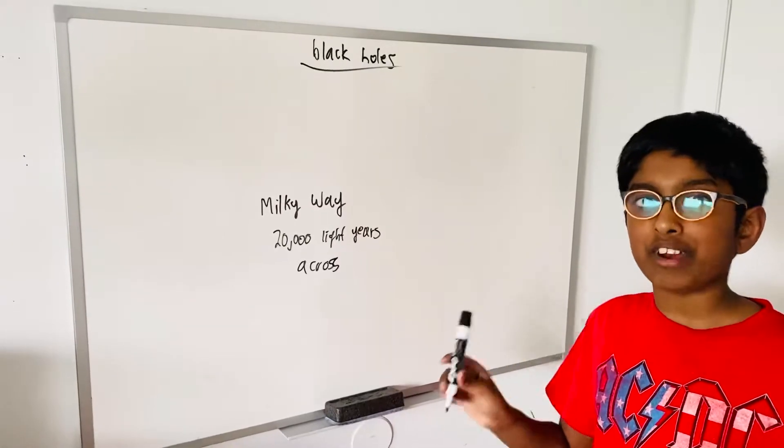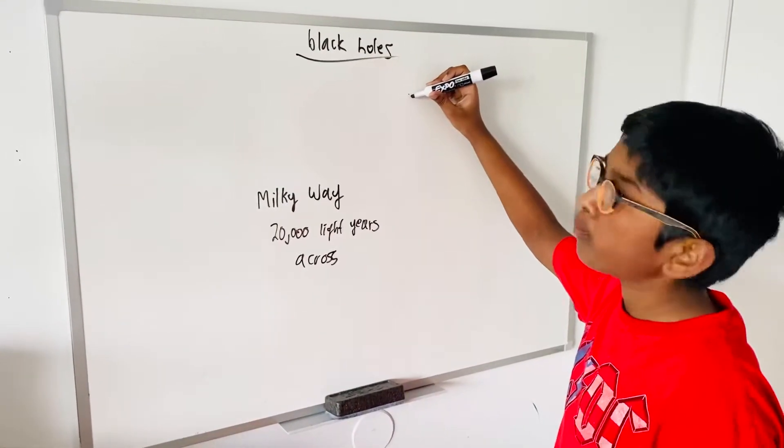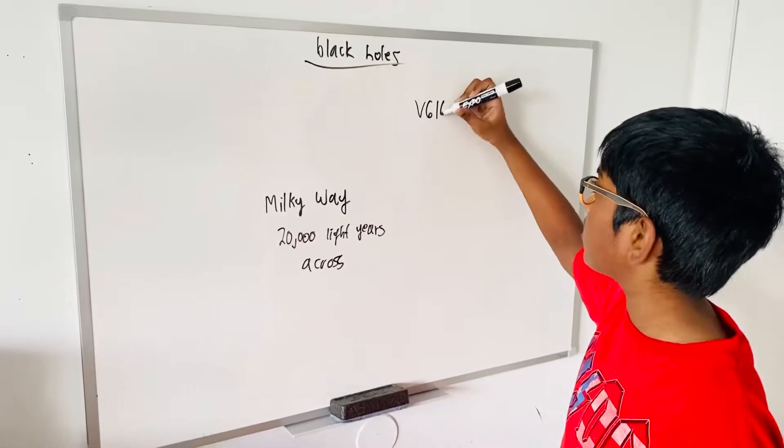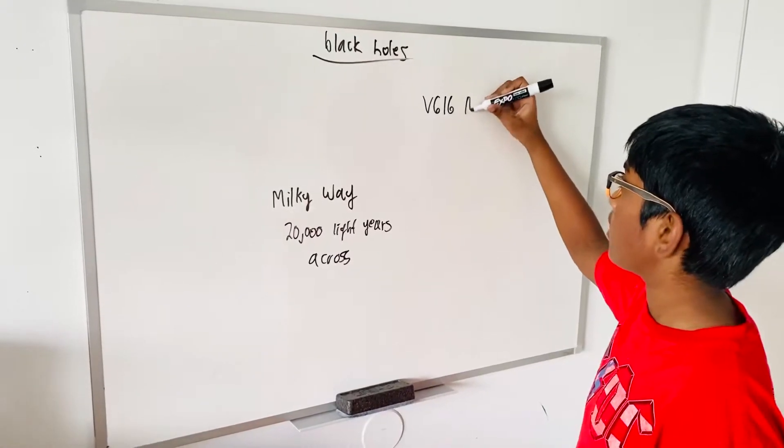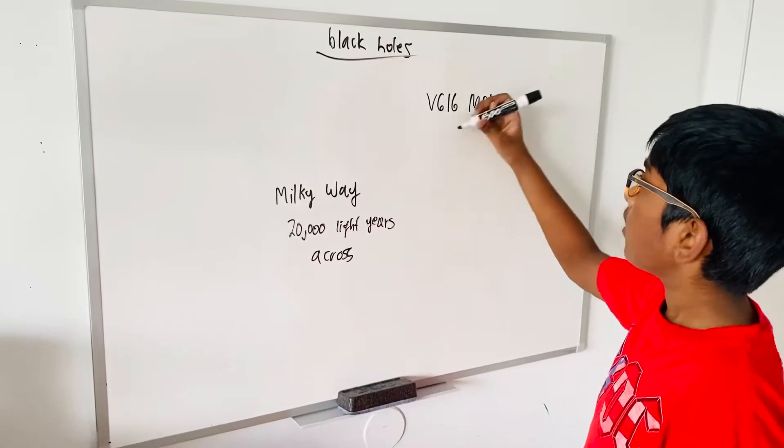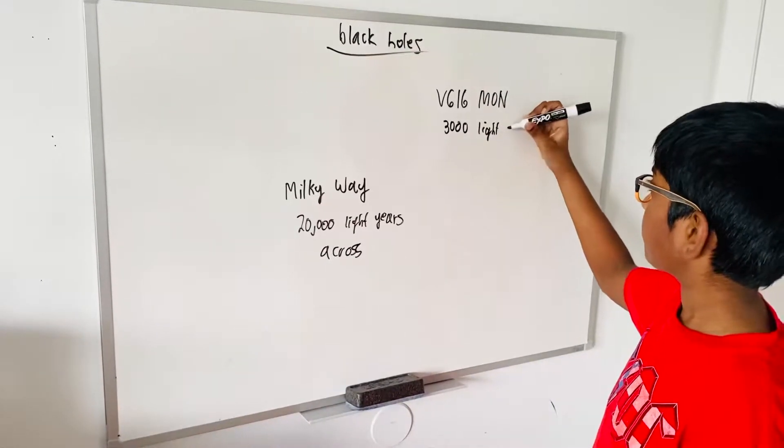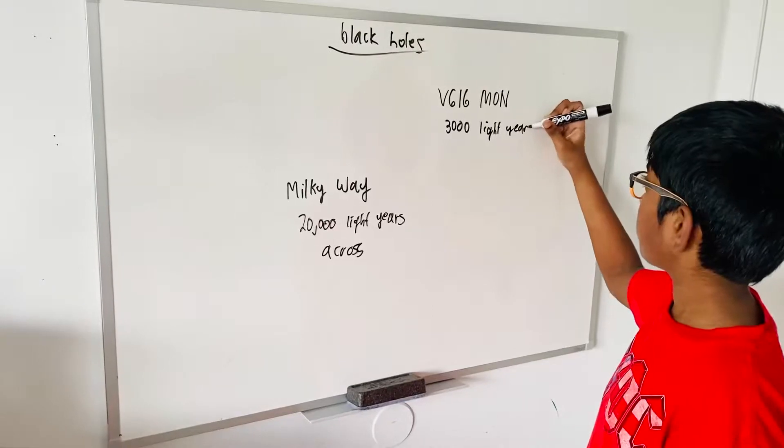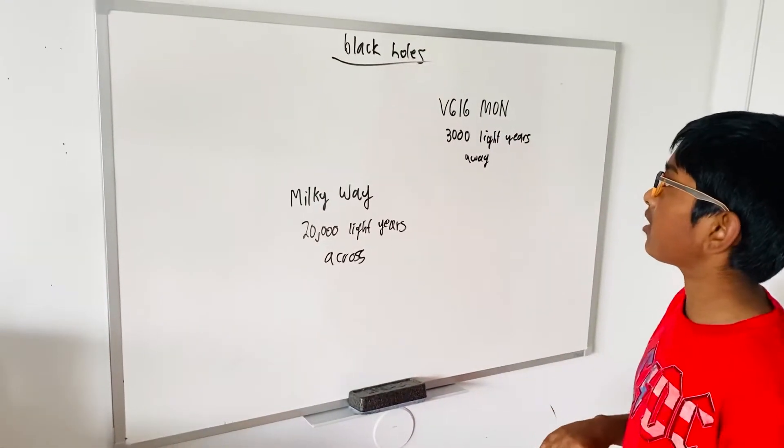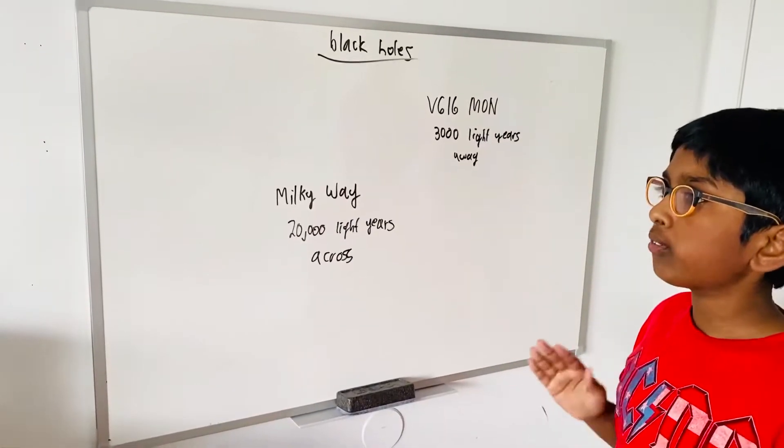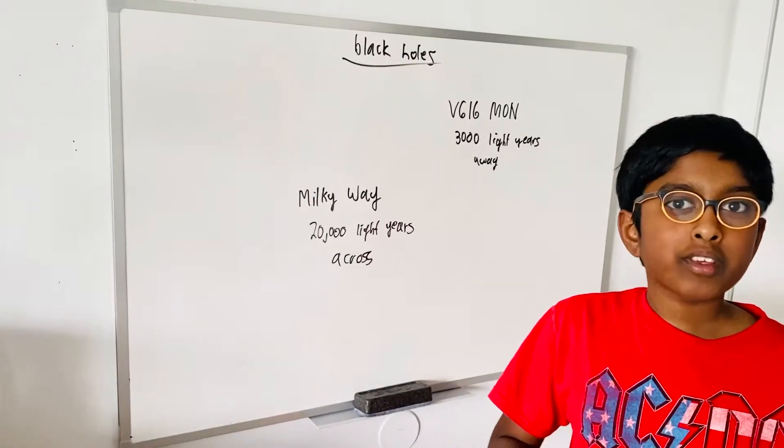Now let's talk about our nearest black holes. Our nearest black hole before 2020 was V616 Mon, which is three thousand light years away.